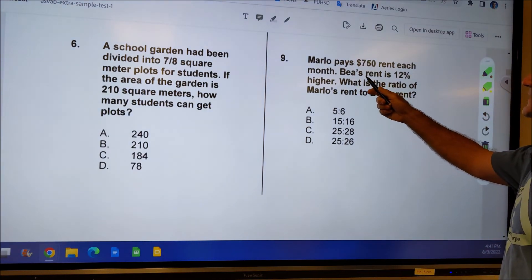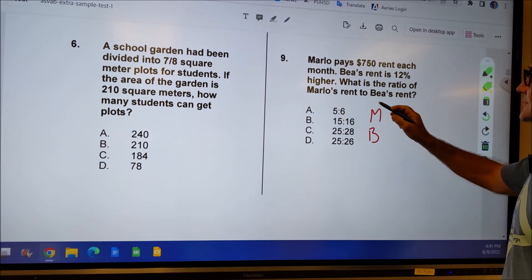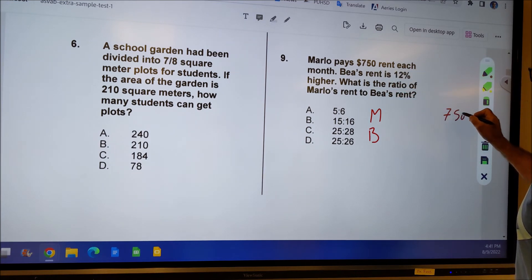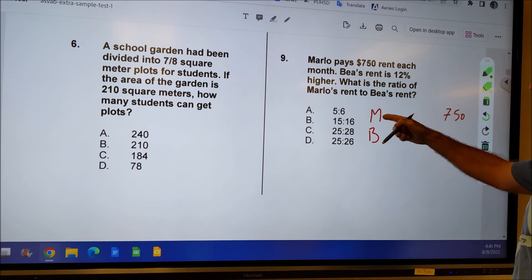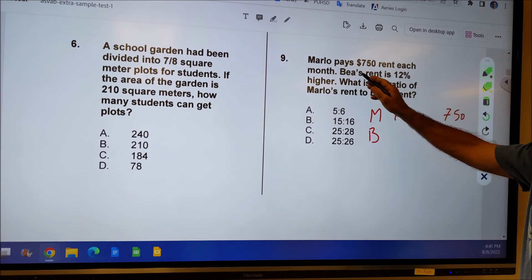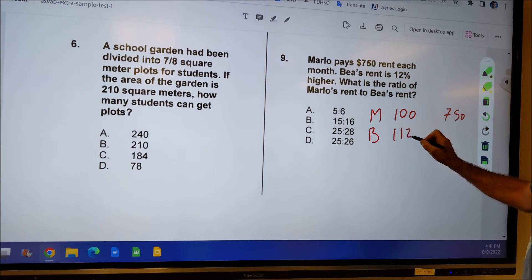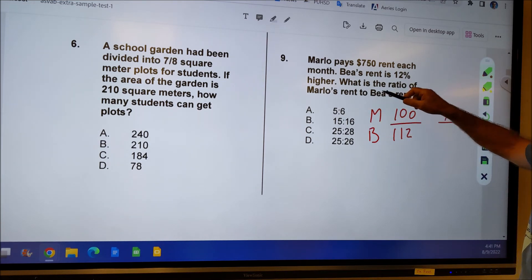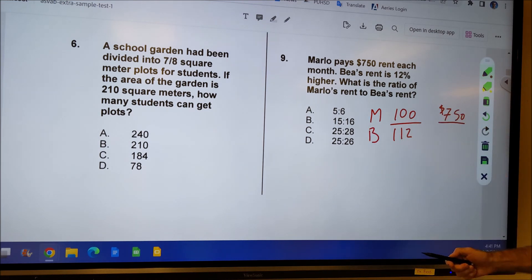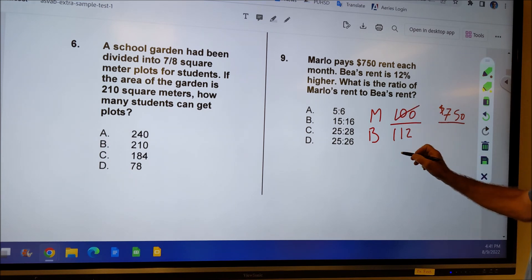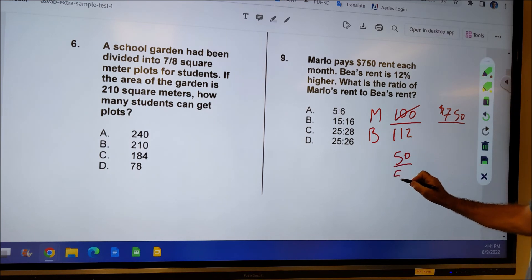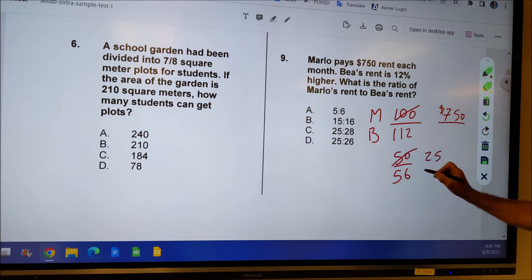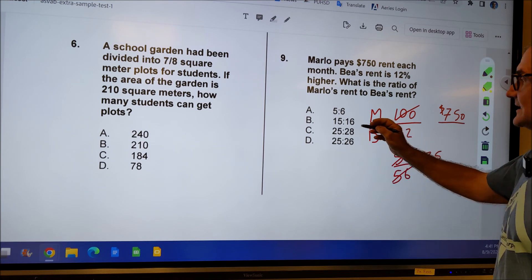Chapter 9 right here, this is going to be chapter 5 ratios. I have two people, Marlow and B. Marlow pays $750 rent each month. B's rent is 12% higher. So if B's rent is 12% higher, I could say Marlow's is 100%, $750. And then B's is 12% higher, or 112%. So 100 is to 112 as what $750 is to what? Actually, I don't even need that dollar amount at all. I know Marlow to B is 100 to 112. That answer is not up there. So I'm going to have to reduce. 2 will go into both these numbers. 2 will go into 100 to give me 50. 2 will go into here to give me 56. That's still not there. I could continue to reduce. That'll give me 25. Half of 56 is 28. And I could see Marlow to B's ratio is 25 to 28, or answer C right there.